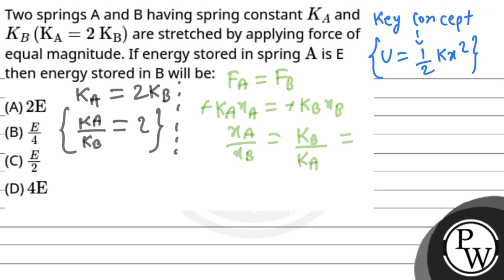But we have seen KA upon KB is 2. So XA upon XB will be 1 upon 2. So we have the extension ratio.